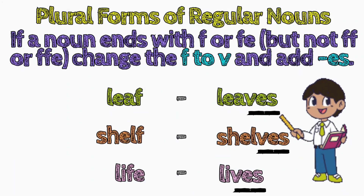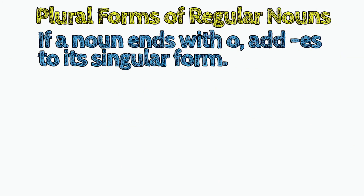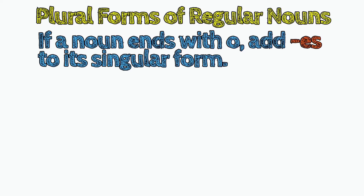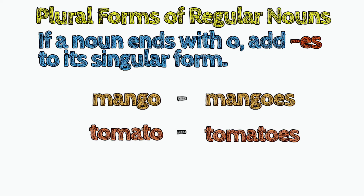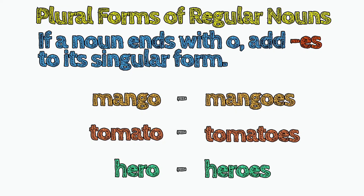Seventh, if a noun ends with O, add ES to its singular form. Examples: mango, mangoes; tomato, tomatoes; hero, heroes.